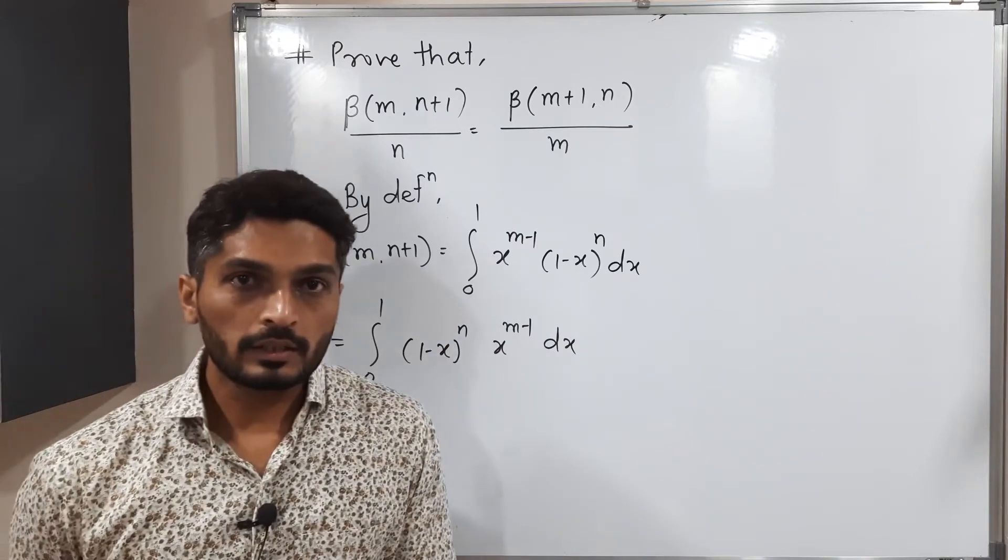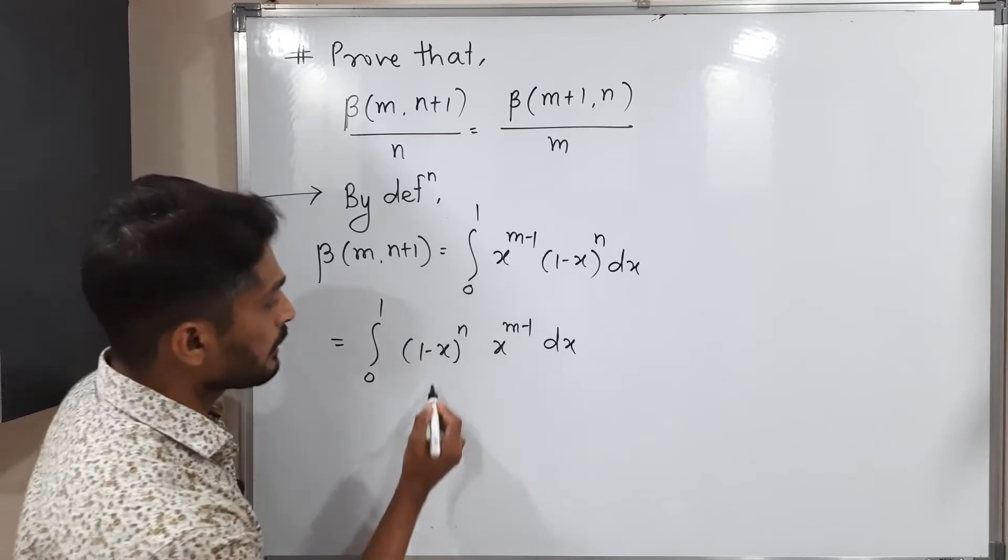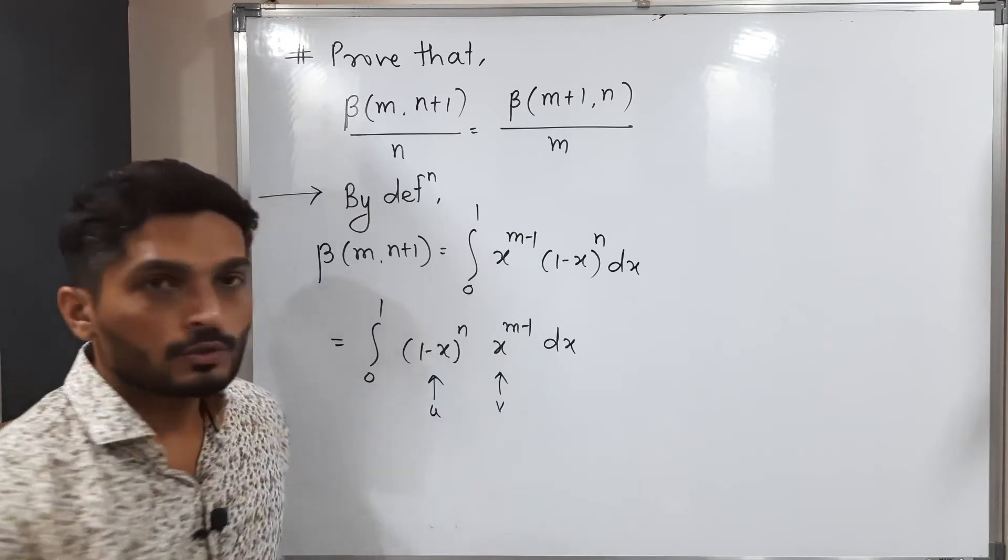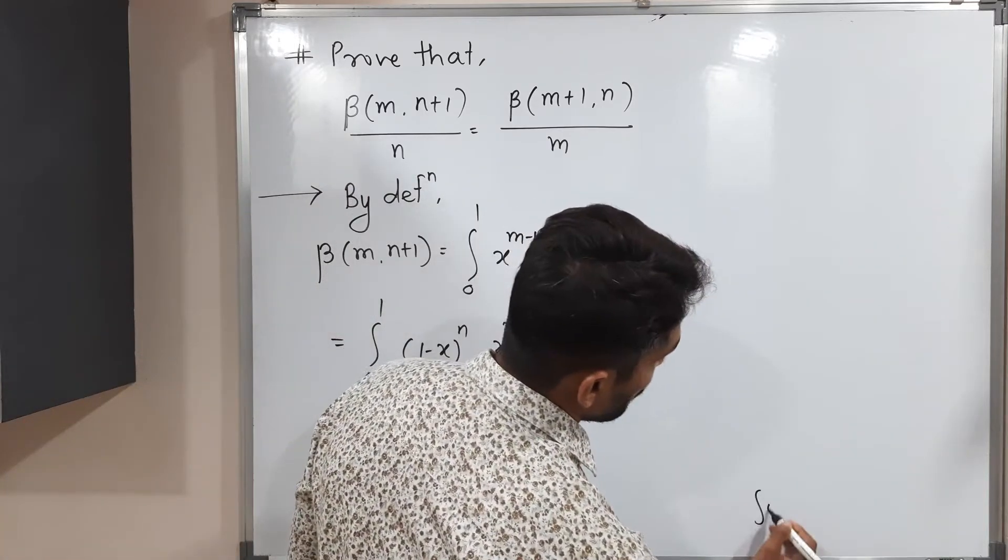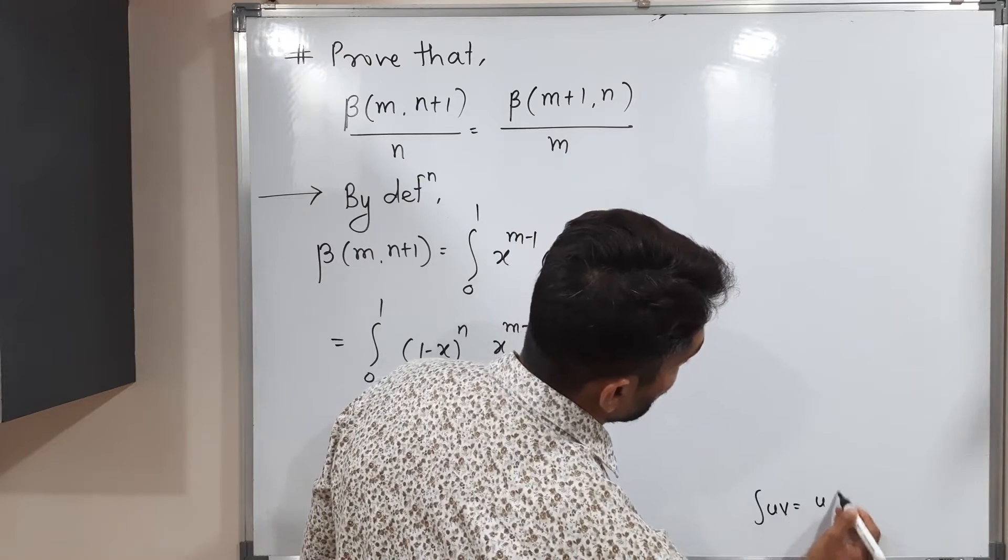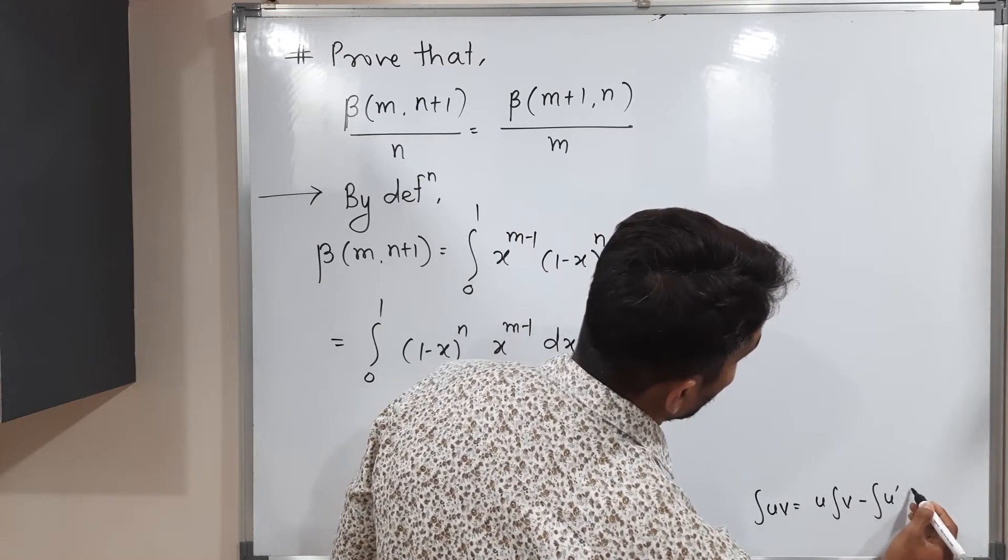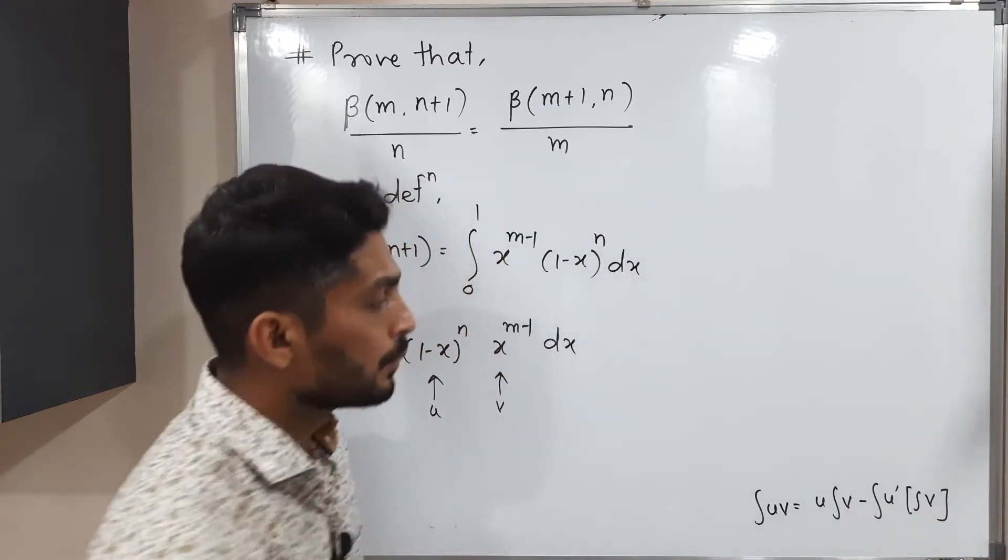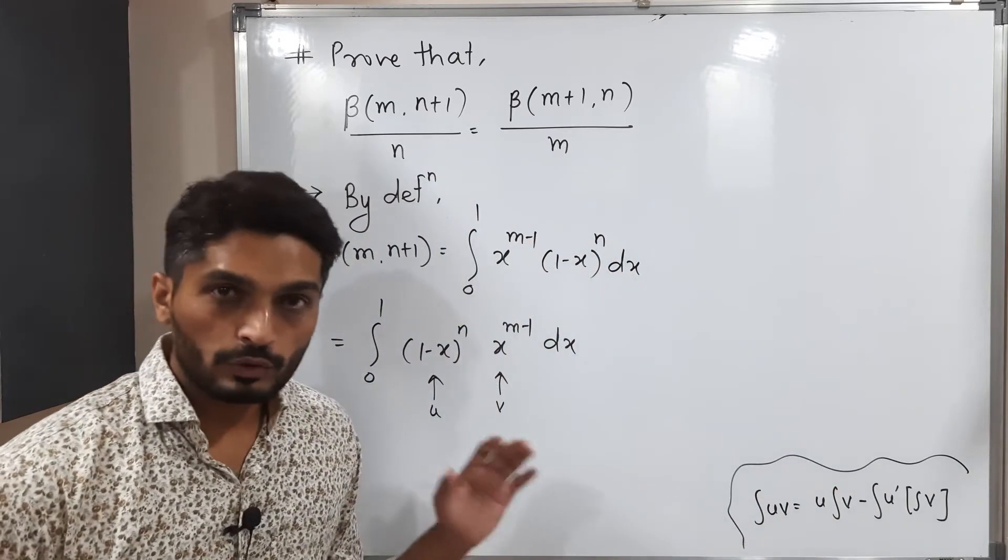So see here there is a product of two functions. I will call it as u and I will call it as v. So you are familiar with integration by parts. Integration u v is equal to u integration v minus integration of derivative of u times integration of v. So this rule we follow in integration by parts. Let us follow the same thing here.